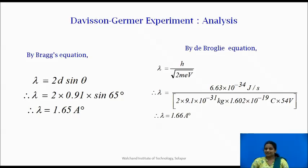And if by de Broglie equation the wavelength of the electron wave is calculated from the accelerating potential v then by the equation lambda is equal to h upon under root 2m into v the wavelength comes to be 1.66 angstrom unit. It is seen that the values obtained experimentally using Bragg's equation and de Broglie equation agreed well.